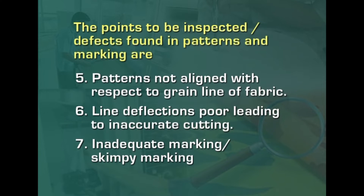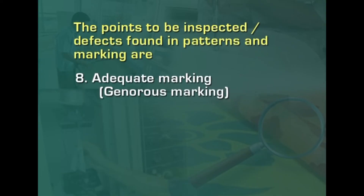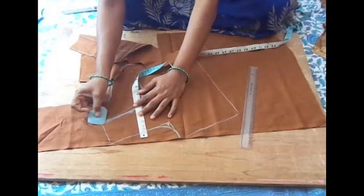Inadequate marking — sometimes called skimpy marking — occurs when either the marker did not use the outside edge of the pattern, or the pattern was moved or swung after partial marking to squeeze it into a smaller space in the interest of fabric economy. Alternatively, the pattern is wound around the edges and should be replaced. Inadequate marking results in components being sewn together with puckering or pleating.